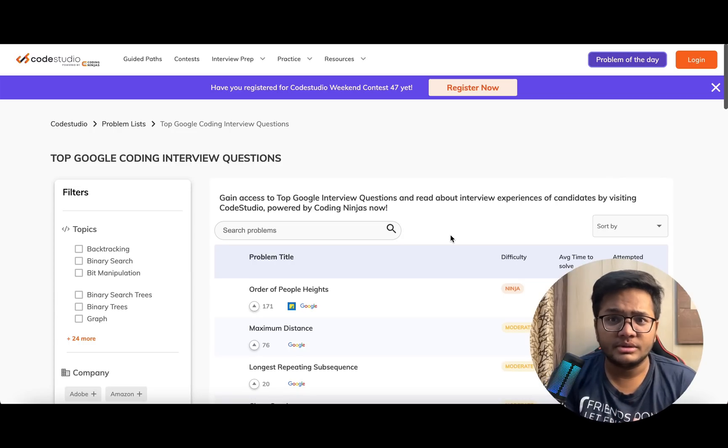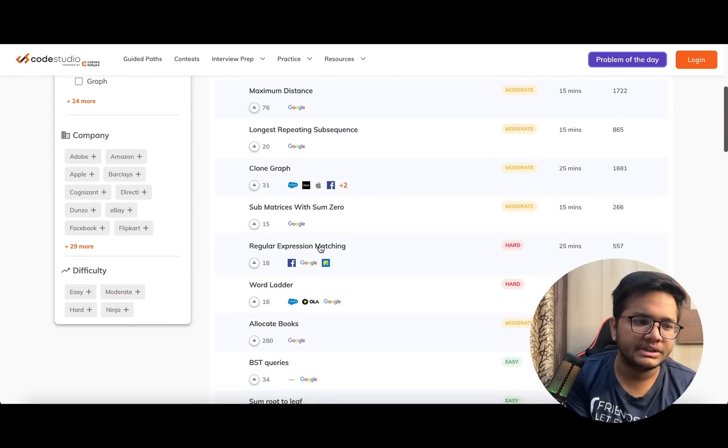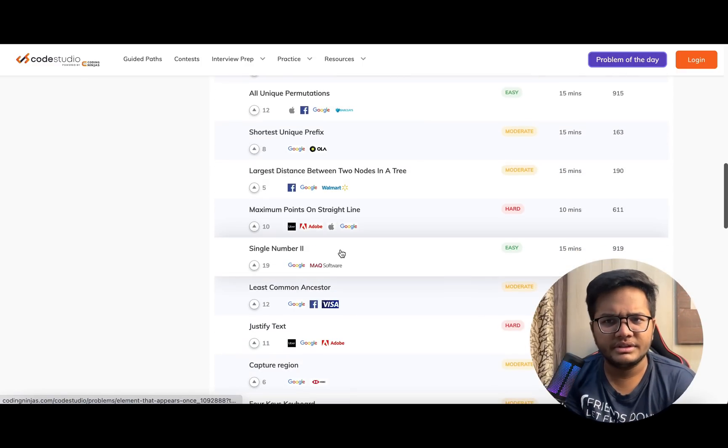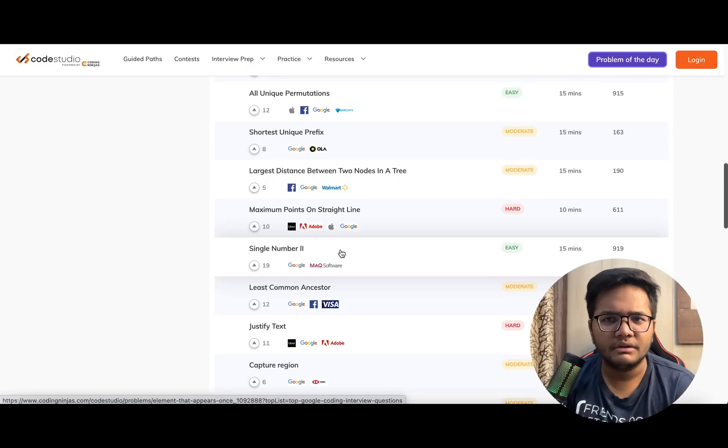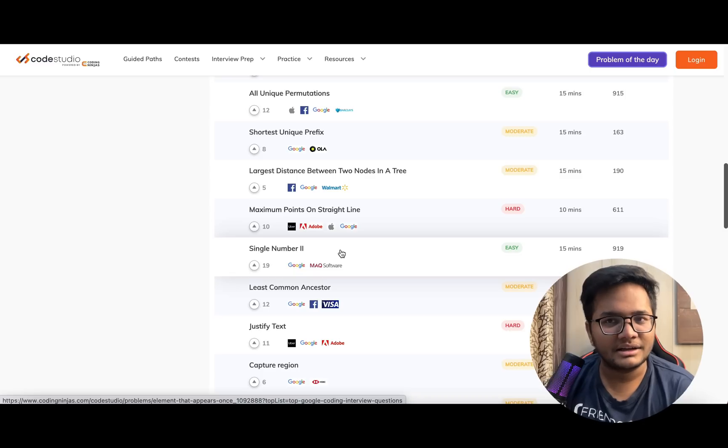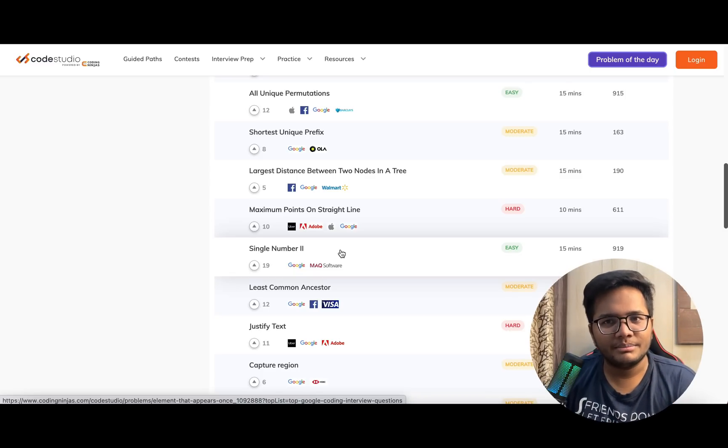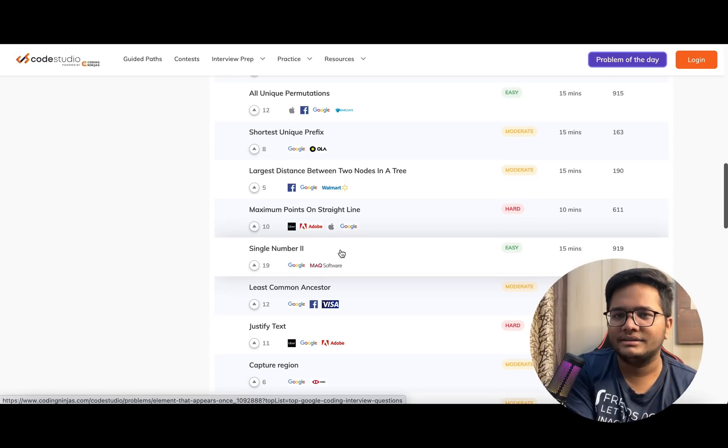I'd like to suggest some resources from where you can prepare. There's a top Google coding interview questions list with a tag of Google. Almost all these questions have been asked in Google directly. You won't see a direct question, but a modification of this kind of question, because they don't ask standard problems. They'll ask you a slightly modified question with a new feature added to the already existing question.